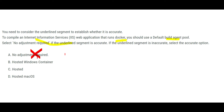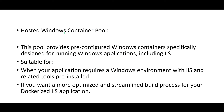So the answer 'no adjustment required' is wrong because adjustment is required. Hosted macOS is also not required because IIS is a Windows application — it is not for macOS. Between hosted and Windows container, this is a Windows application, so apply common sense: we want something Windows-specific. The hosted Windows container pool provides pre-configured Windows containers specifically for Windows applications like IIS.